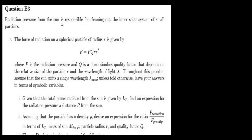The radiation pressure from the sun is responsible for cleaning out the inner solar system of small particles. In the first part of the question, the force of radiation on a spherical particle of radius r is given by F = P·Q·π·r², where P is the radiation pressure and Q is the dimensionless quality factor that depends on the relative size of the particle and the wavelength of the light lambda.